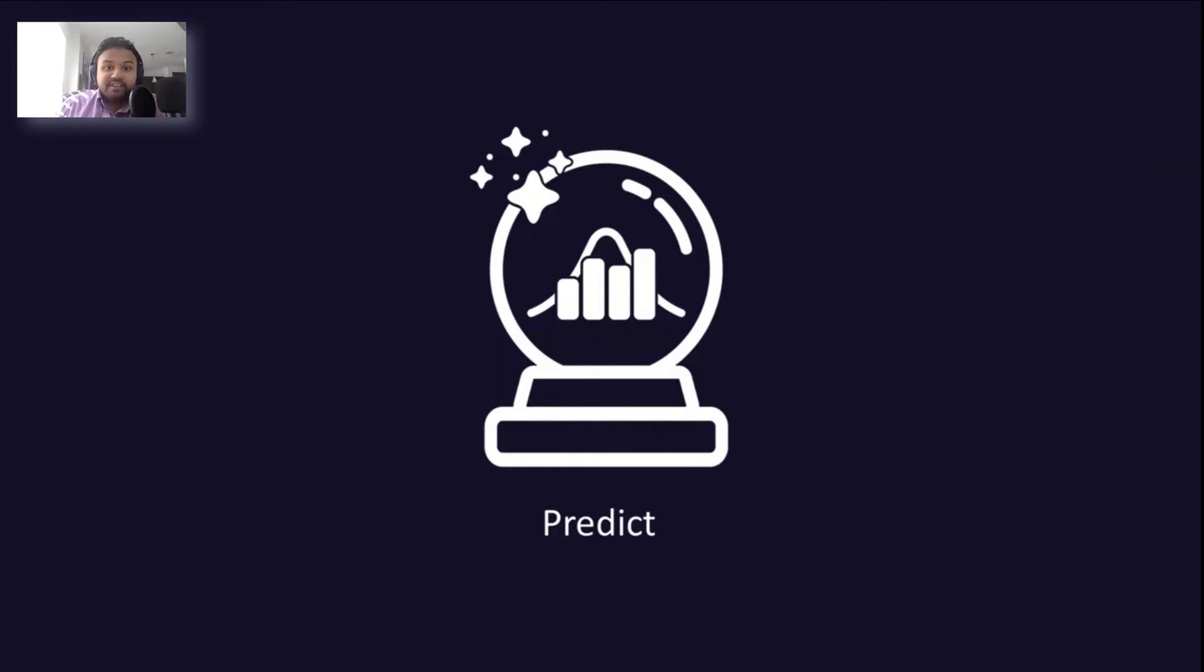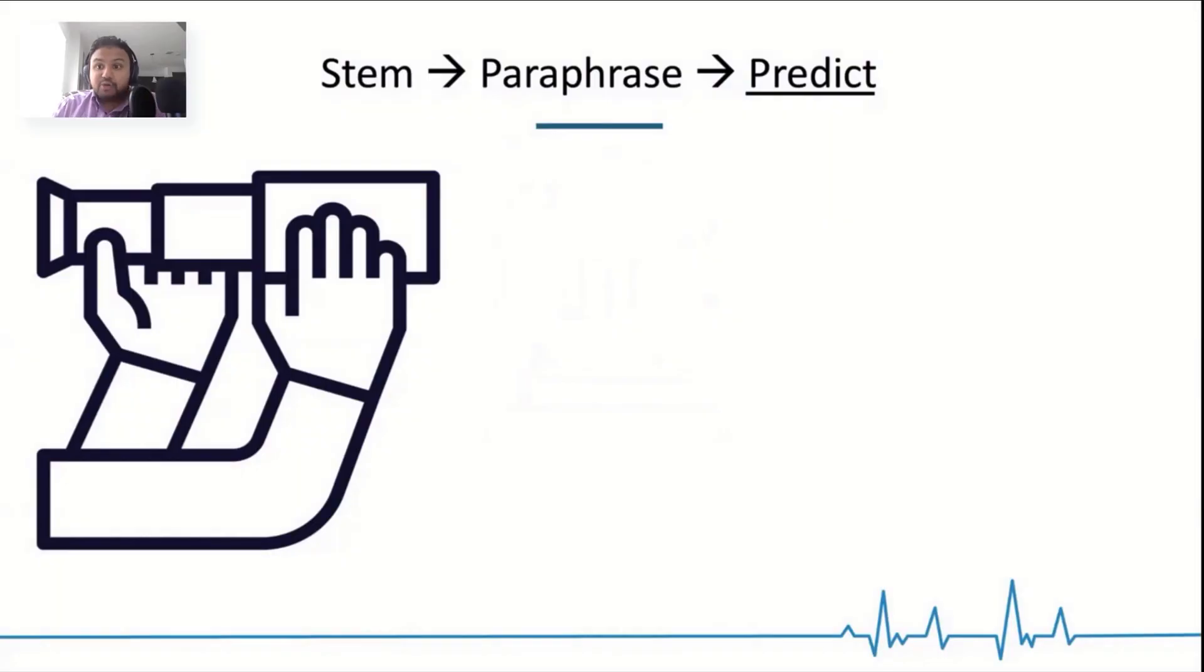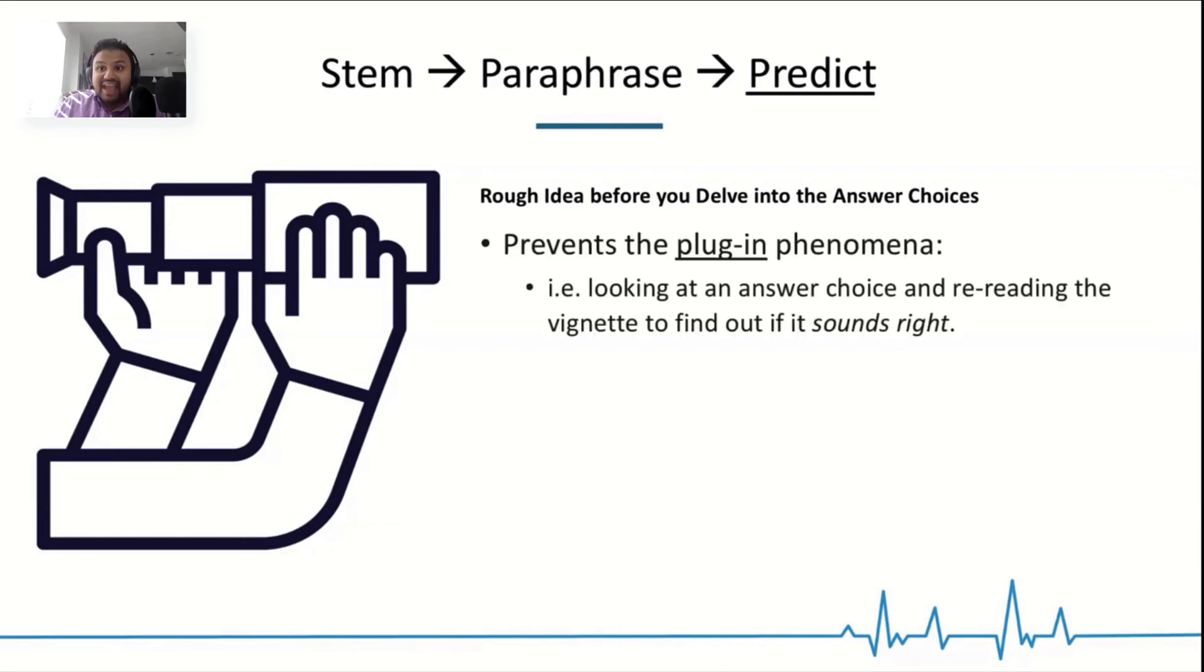And then finally, we're going to be talking about prediction. Now you've gone through line by line, figuring out the why. You should have a good idea of what the answer is before you go into the answer choices. And that prevents the plugin phenomena. Prediction is going to help you prevent the plugin phenomena. And what is the plugin phenomena?